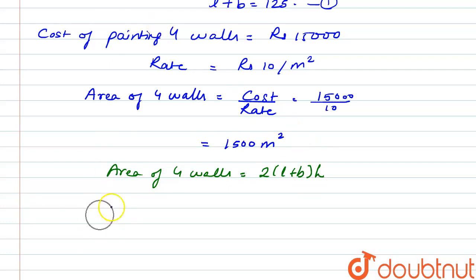So on equating this we have twice of L plus B into H equal to 1500 meters square. And we have the value for L plus B as 125 from equation 1. So 2 into 125 into H is equal to 1500.